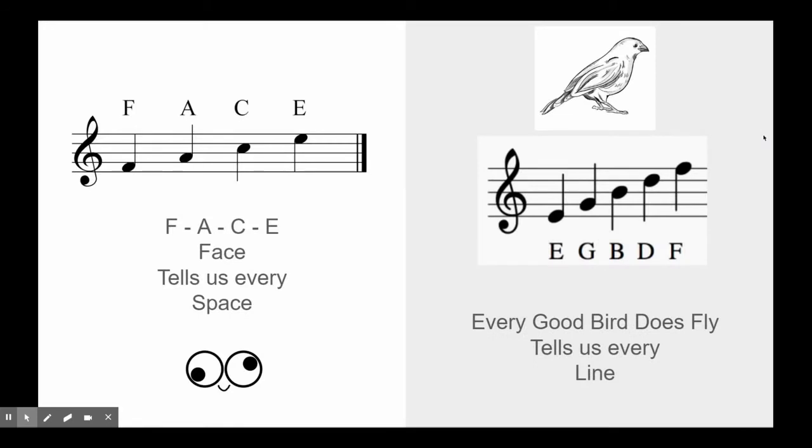Now these two sayings are really going to help you to read notes on a treble clef. The first saying sounds like this: F-A-C-E face tells us every space. Go ahead and try saying that with me right now. Ready go. F-A-C-E face tells us every space. And I put a little face here to remind you. These are the spaces. What that means is that the circle of the note, the note head, is in between lines. It's in the spaces. And there are four spaces which is why there's only F, A, C and E.